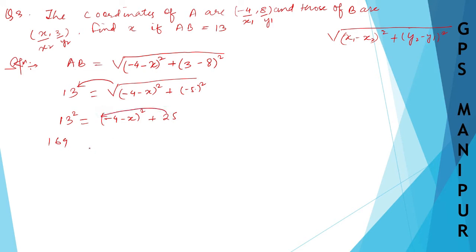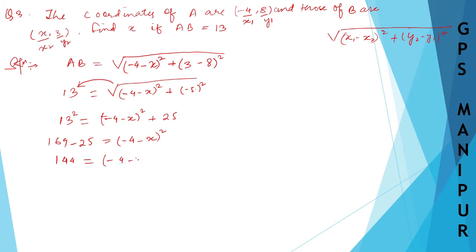Transfer 25 to the other side, so it becomes minus 25. That gives 169 minus 25 equals 144, which equals (-4 minus x) whole square.